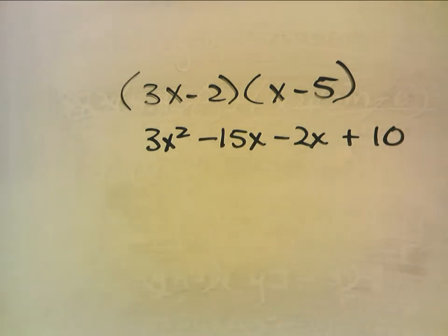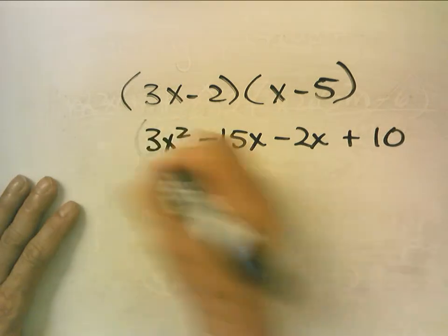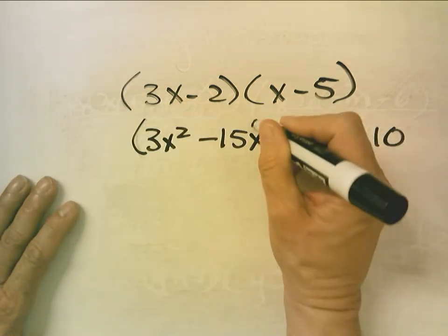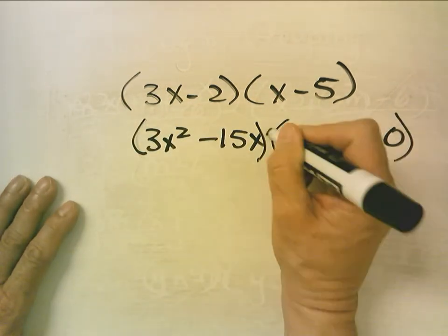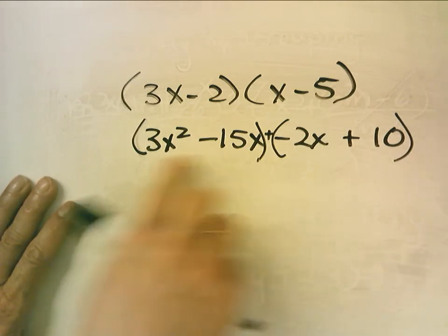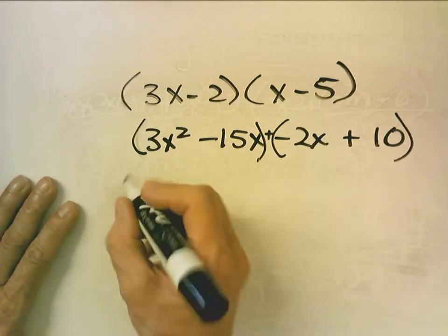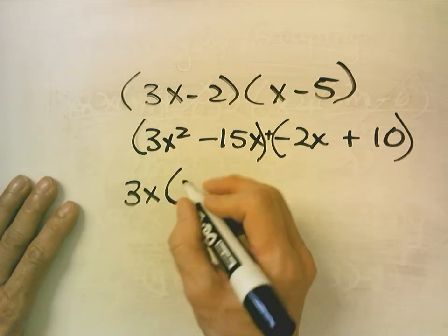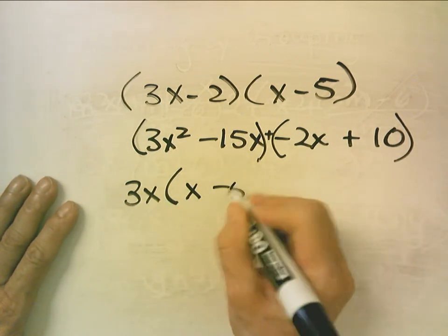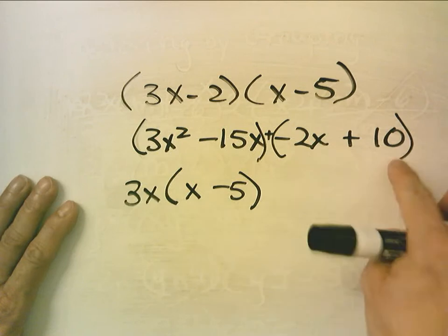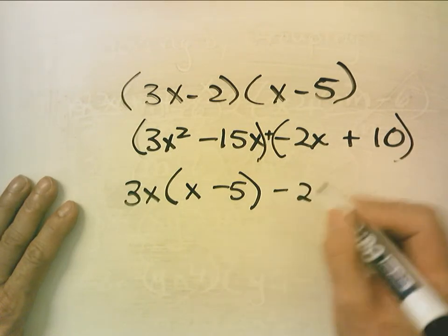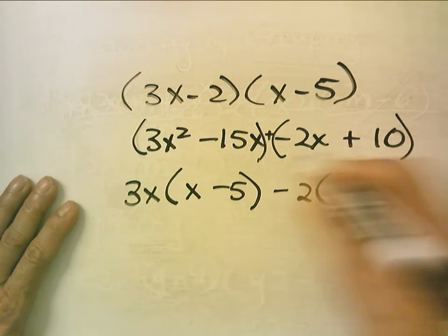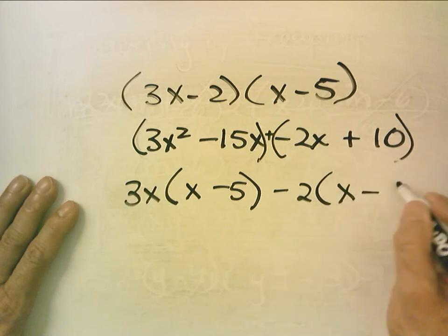sometimes you can factor by grouping. So I group these two together and these two together. I look for a common factor here. What's my common factor here? 3x. What do I have left when I take out 3x? I have x minus 5. Here, what's a common factor? I'm going to say negative 2. What do I get when I take out a negative 2? I get x minus 5.